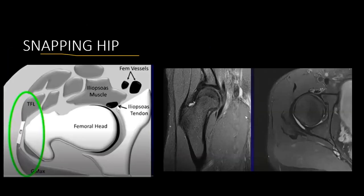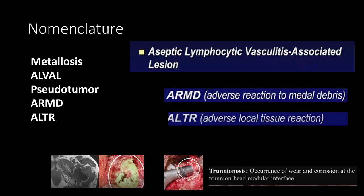There's another entity we call snapping hip. There are internal and external snapping of the hip. One common type is the iliotibial band snapping over the trochanteric region. Another snapping is by the iliopsoas tendon in the anterior aspect. There are a lot of hip replacements being done. This is a total hip replacement with a lot of collection and soft tissue around the prosthesis — we call it pseudotumor.